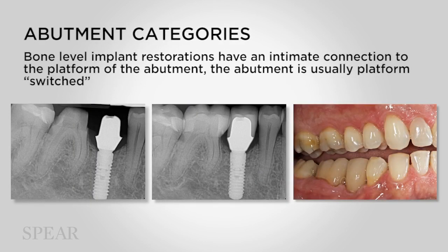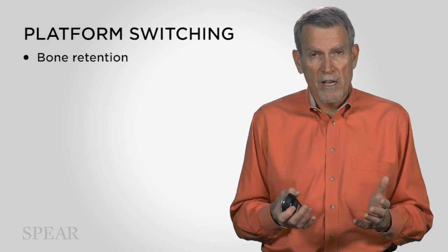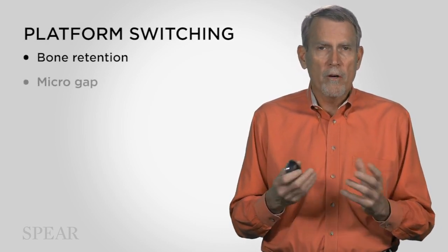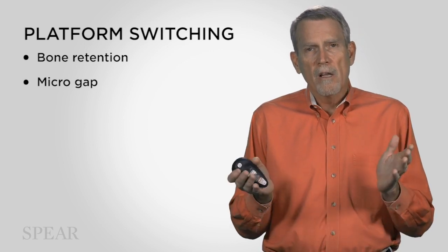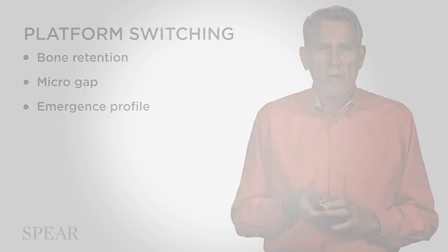Bone-level implant restorations are different in that the restoration has an intimate connection to the platform of the abutment, not the implant. The abutment goes into the interior of the implant, which is sometimes called platform switching. It allows for much better bone retention, helps us avoid what's called micro-gap, and allows for better emergence profile as the abutment comes out of the platform.